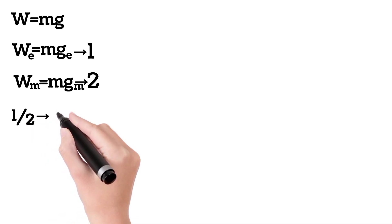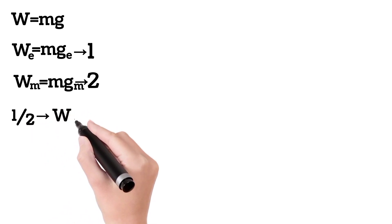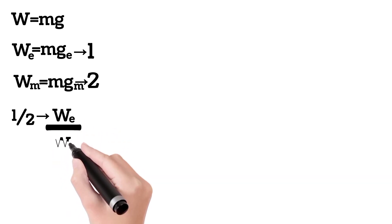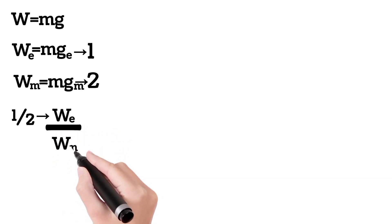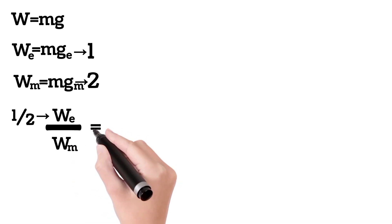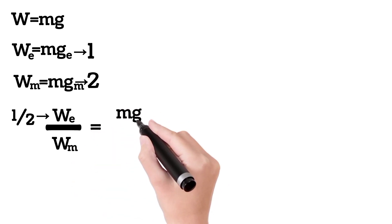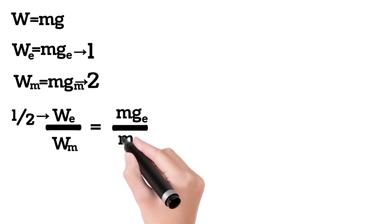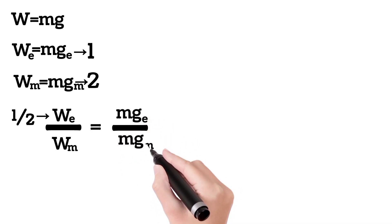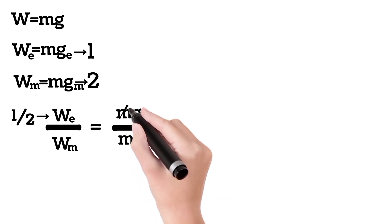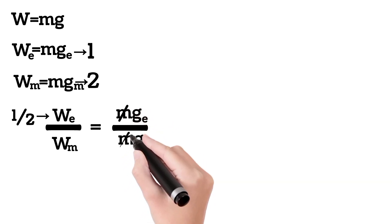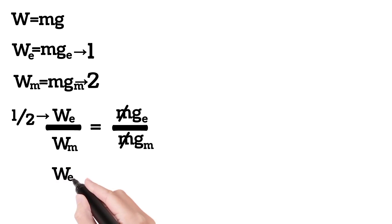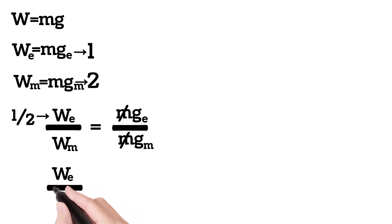We set up the expression: WE divided by WM is equal to MGE divided by MGM. Since mass M cancels on both sides, we get WE divided by WM equal to GE divided by GM.